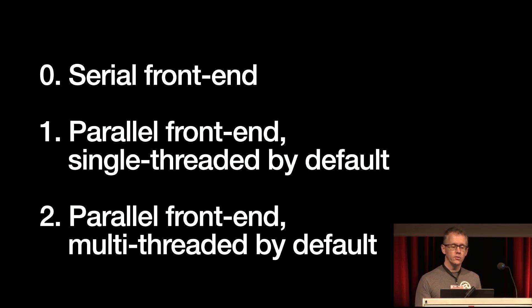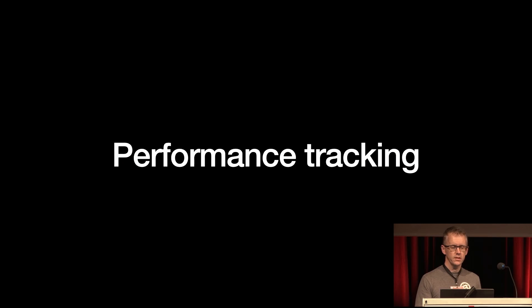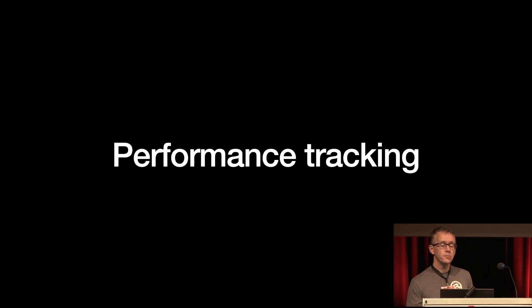After that, step two would be to change the default number of threads to something greater than one, which will make the stable compiler's front end parallel by default. The timeline for this step is not yet decided. There is another complication: we do a lot of performance tracking for the compiler. We have a comprehensive benchmark suite that is run on every merge, and people regularly triage the results to catch regressions. The parallel front end makes this harder.